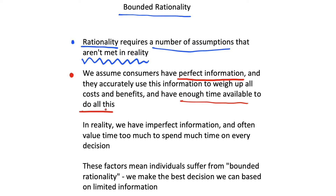In reality when we are making decisions we may do lots of research depending on what the decision is. For example, if we're going to a restaurant and choosing something on the menu, we may consider our options and decide what would offer us the most utility. However, in reality we may not have enough time to weigh up every option and read all the details on every item. In reality we have imperfect information.